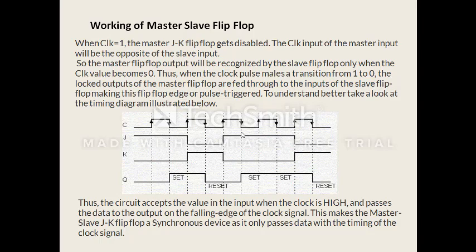When the CLK clock pulse is high (1), the master flip-flop is enabled and accepts input, while the slave flip-flop is disabled because it receives an inverted clock. The master's input is opposite to the slave input since the clock pulse is inverted. The master flip-flop output will be recognized by the slave flip-flop only when the clock value becomes zero. When the clock pulse goes from 1 to 0, the master is locked, and the master flip-flop output is fed as input to the slave flip-flop, making this a pulse-triggered flip-flop.